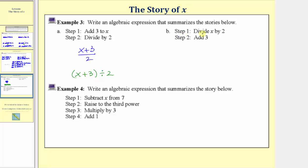For part b, step one is to divide x by two, and step two is to add three. Starting with x, we first divide by two — in fraction form that would be x over two, or x divided by two. For step two, we take this result and add three, so it's going to be this fraction plus three. It would also be correct to write x divided by two in parentheses, then add three.